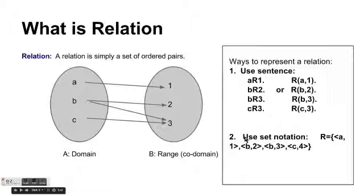There are at least three ways to represent a relation. We can use sentences: aR1, bR2, bR3, and cR3. So, this position is the first element. This position is the second element. Or we can use a predicate logic formula like this, R, and the parenthesis, and the first element, and the second element. These two things are identical, just notational difference.